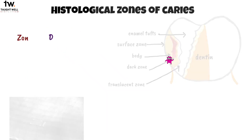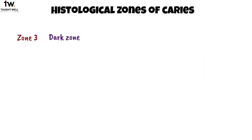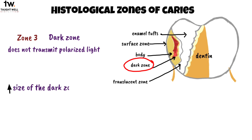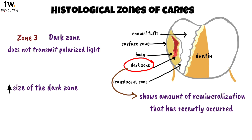Zone 3 is the dark zone, which does not transmit polarized light. Caries is an episodic disease with alternating phases of demineralization and remineralization. Experimental remineralization has shown increases in the size of the dark zone at the expense of the body of the lesion, and the size of the dark zone is probably an indication of the amount of remineralization that has recently occurred.